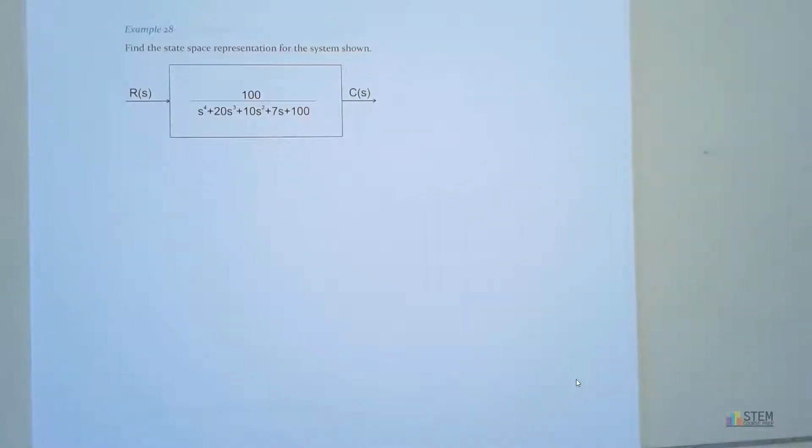Hey guys, what we have here is a transfer function right here. That's g of s. We've got r of s as our input, c of s as the output. And what we want to do is we want to convert this transfer function over to state space. That's what we're going to do.